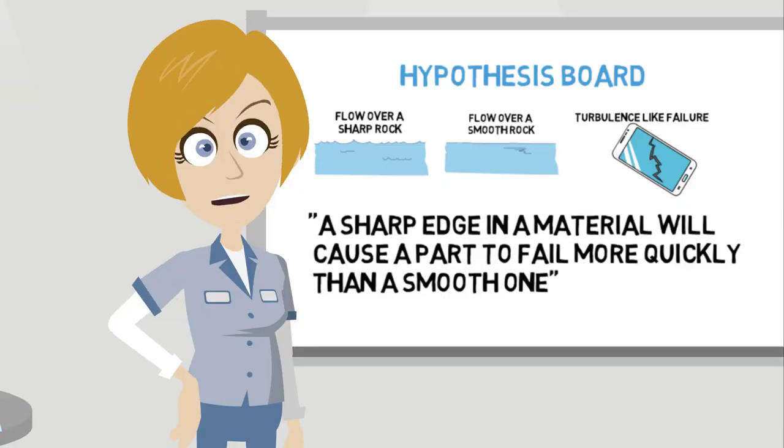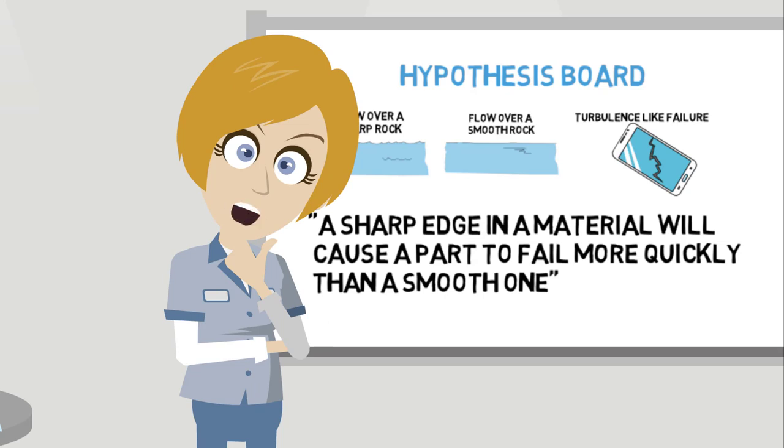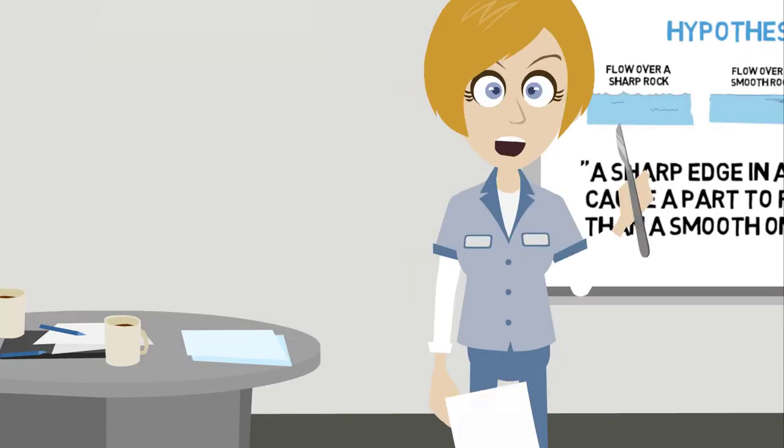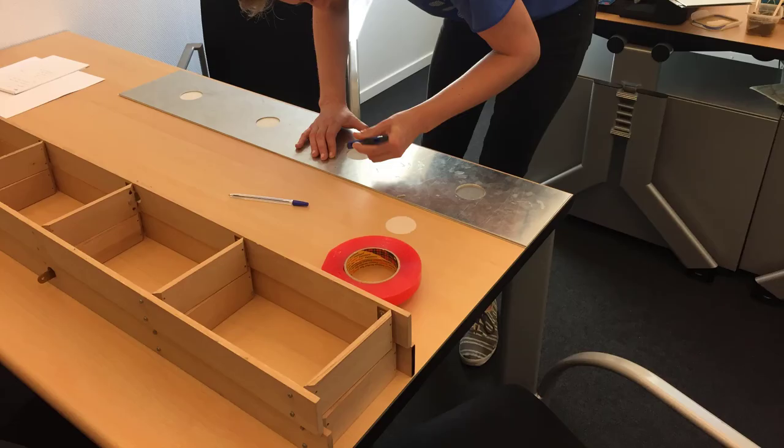By now you know that before we jump into testing, we'll need to find an experimental design that will prove or disprove our hypothesis. Though we can't really see stress flowing in a material, we can use something that will easily deform and allow us to more easily observe how loads affect it. Paper is a good option. To test our hypothesis, we'll cut out squares and circles from the paper, giving us sharp corners and rounded edges. Now if we just pull the paper apart by hand, we have two issues. One, the paper isn't strong enough on its own to take much load. And two, there's no quantitative measurement.